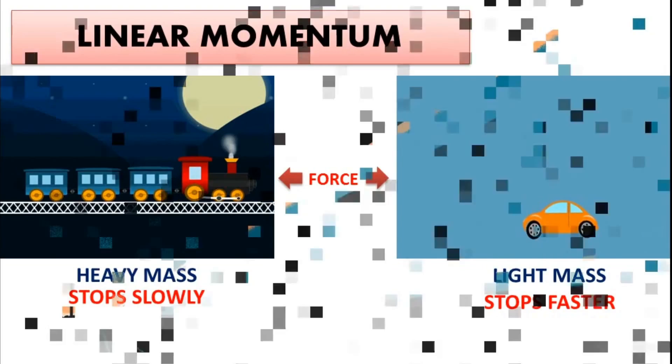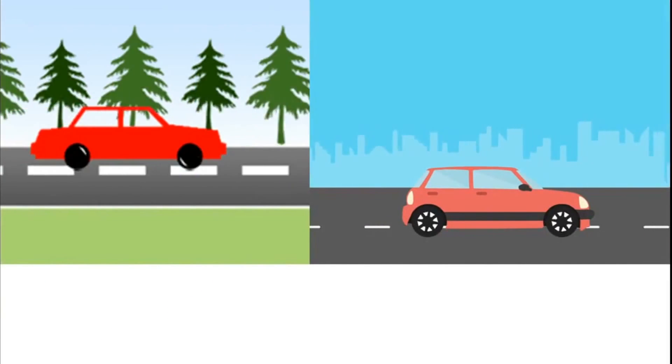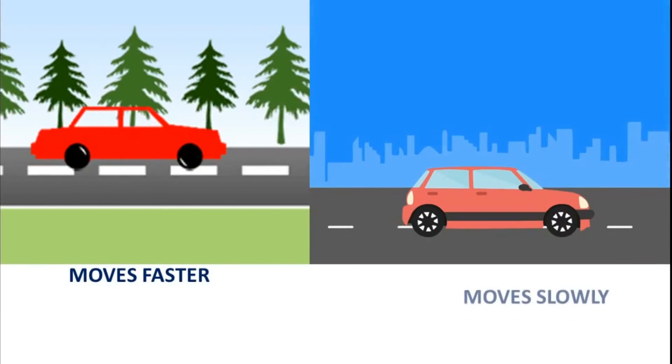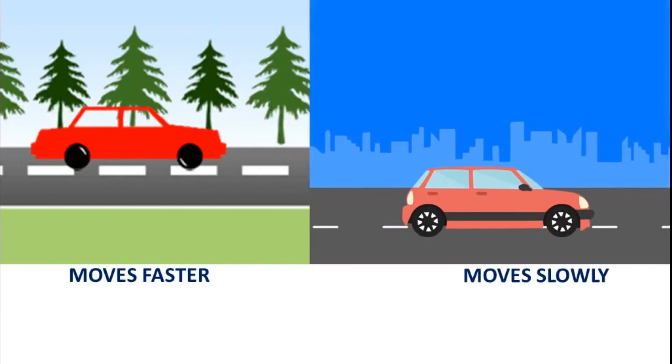Mostly we wonder why a train does not stop at once when brakes are applied. We know the reason, because train is so heavy. Suppose two similar cars with equal mass. One is moving very fast and the other moves slower than the first one.